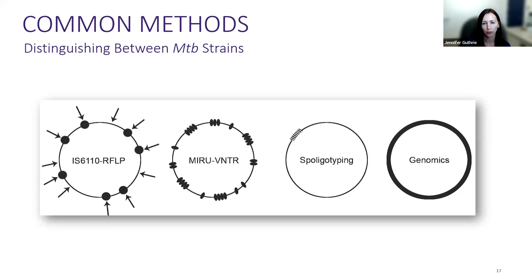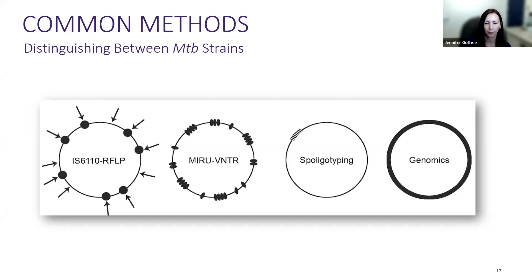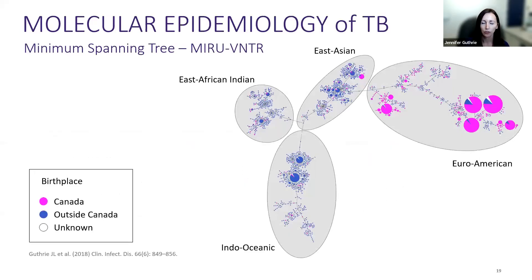With whole genome sequencing, we look at virtually the entire genome, giving us the highest discriminatory power. However, it is quite involved both on the laboratory side and the analysis side. The other genotyping methods can be quicker, but may not offer the same level of discrimination between strains.